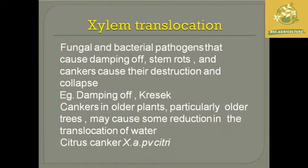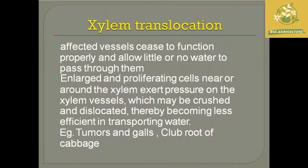Now we are going to see xylem translocation. Fungal and bacterial pathogens causing damping-off, stem rot, and canker lead to collapse of the xylem in the host plant — examples being damping-off and canker in older trees. The organism Xanthomonas axonopodis pv. citri causes citrus canker and a sub-reduction in water translocation. Affected vessels cease to function properly and allow little or no water to pass through, while cell proliferation around the xylem exerts pressure on vessels, making them less efficient in transporting water.